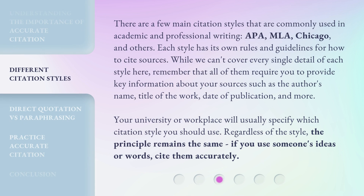There are a few main citation styles that are commonly used in academic and professional writing: APA, MLA, Chicago, and others. Each style has its own rules and guidelines for how to cite sources. While we can't cover every single detail of each style here, remember that all of them require you to provide key information about your sources, such as the author's name, title of the work, date of publication, and more. Your university or workplace will usually specify which citation style you should use. Regardless of the style, the principle remains the same: if you use someone's ideas or words, cite them accurately.